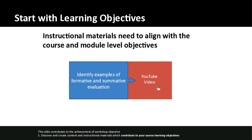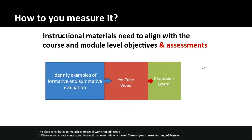A YouTube video might be one piece of instructional material that supports this objective, but there might be others as well. We're not looking for just one be-all-end-all piece of content. We start with objectives, then have instructional materials aligned to those objectives, then a mechanism for assessing whether objectives are reached — in this case, a discussion board assignment that tests whether students can identify examples of formative and summative evaluation.